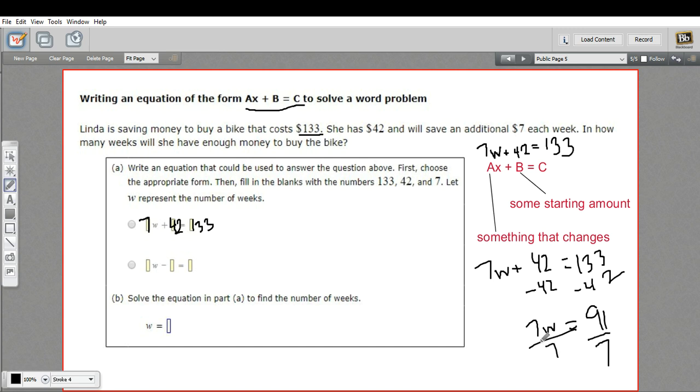And let's see. 7 times 10 is 70. Three more 7s would be 21 plus 70. That would be 91. So I can do this without a calculator. W should be 13.